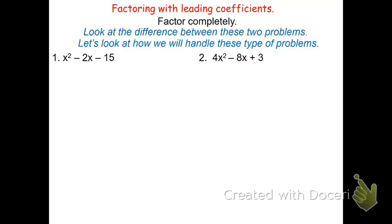In this video, we'll review how to factor trinomials and other polynomials with leading coefficients. Let's look at our two examples. The one on the left is just a 1x squared, so this trinomial is going to be pretty easy to factor. The one on the right has a 4x squared — a leading coefficient of 4. This one's going to be a little bit more difficult because I cannot just factor out the 4, as 4 will not go into 3 evenly. So I'm going to have to use a different approach.